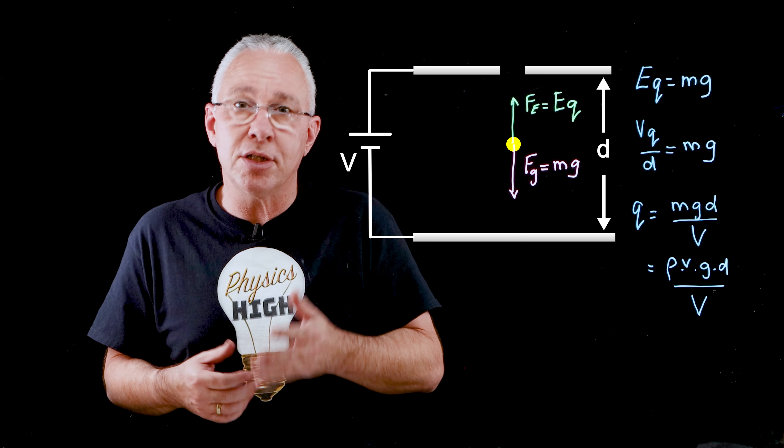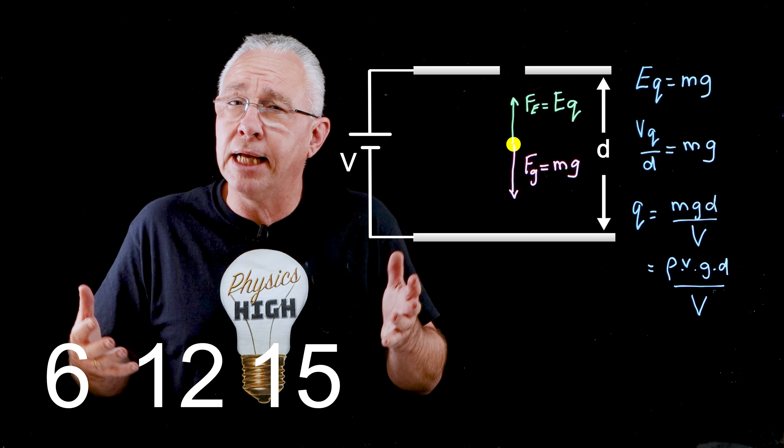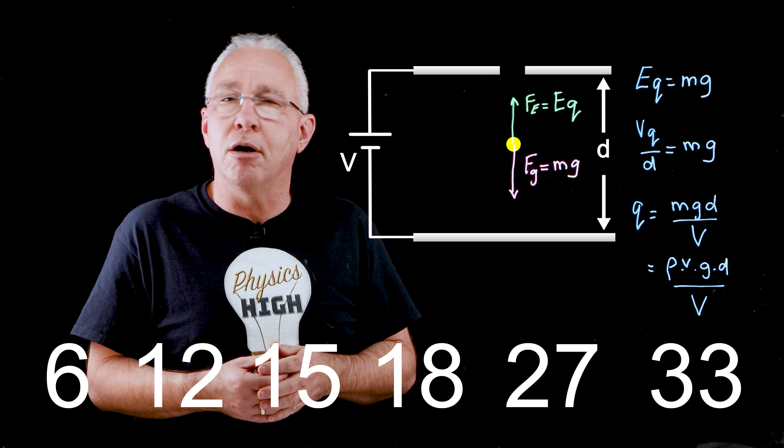Now I liken it like this. Imagine I gave you a series of numbers: 6, 12, 15, 18, 27, 33. You see a pattern. They are all multiples of 3.